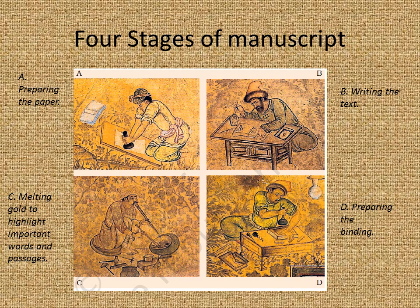We talked about handwritten documents under the Delhi Sultans. Here we can see the four stages in which these documents were prepared: preparation of paper, writing of the text, meriting gold to highlight important words and passages, and finally preparation of binding.